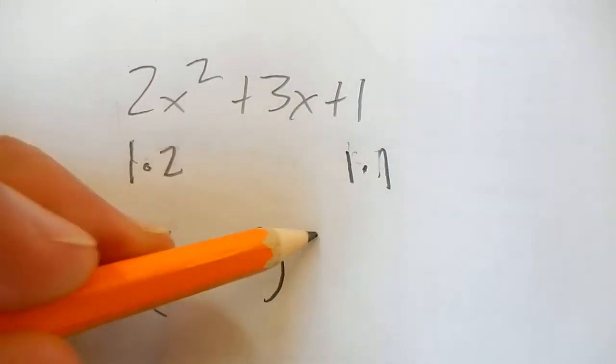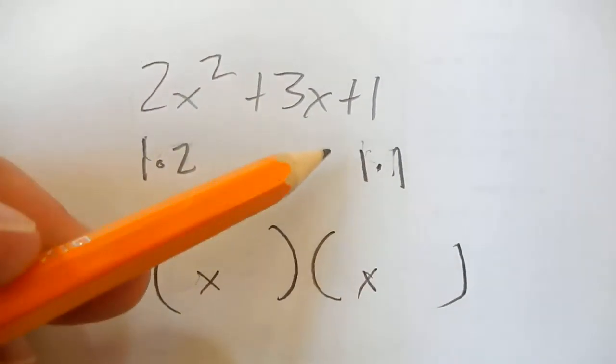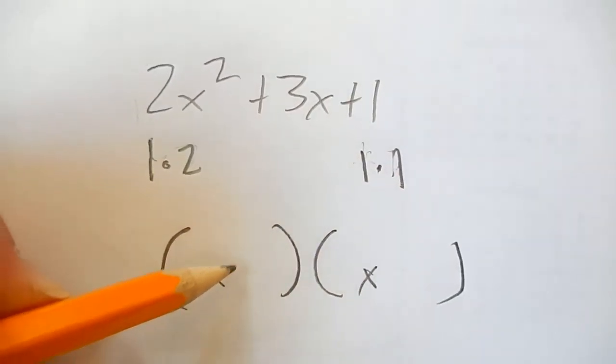And then you know you're going to split it up so it looks like this, right? Something times x, something times x. And then since these are both 1, it's going to be plus 1 plus 1.